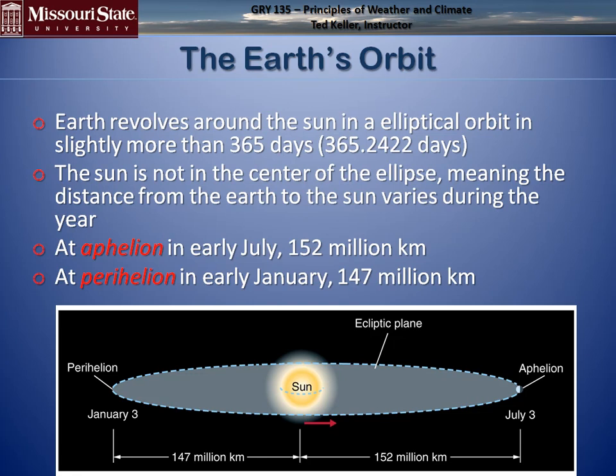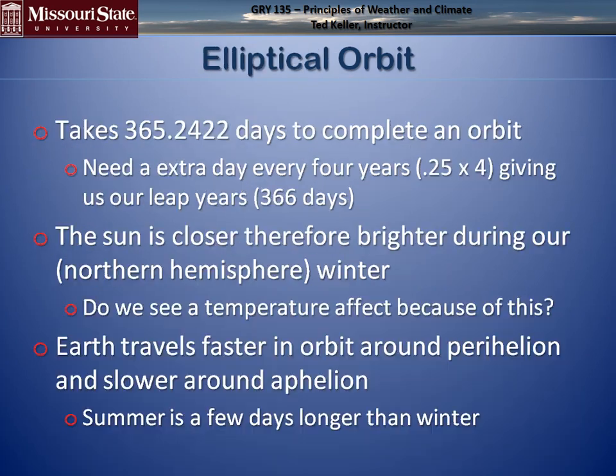At Aphelion, we are actually at our farthest point from the Sun at 152 million kilometers — that's in July. Perihelion is in January, at 147 million kilometers.